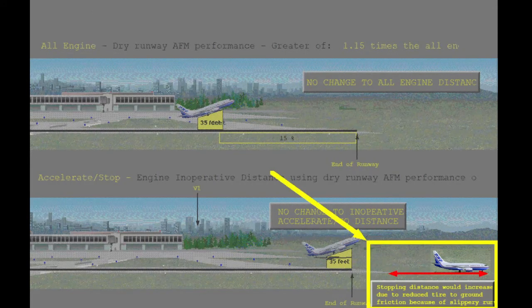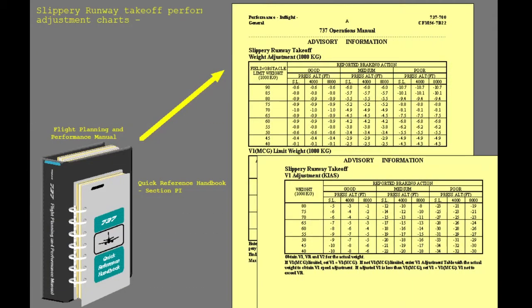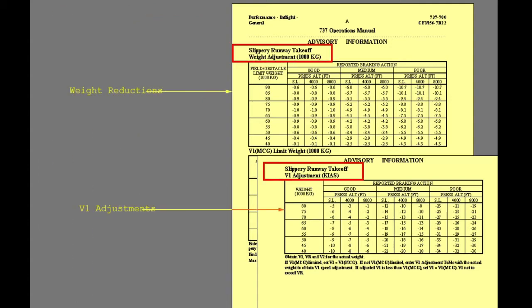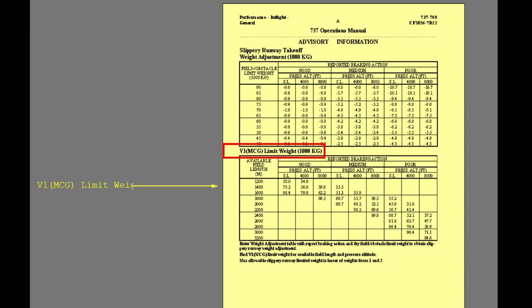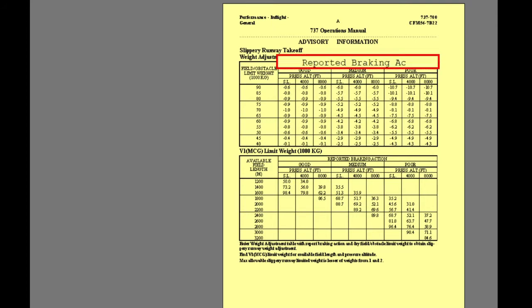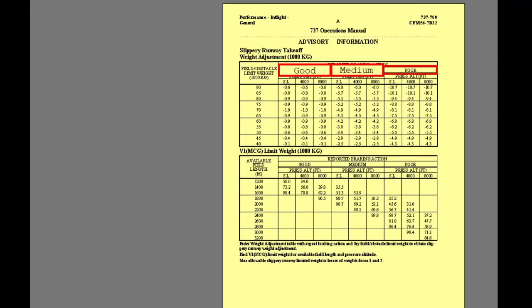As with the wet runway data, an airplane dispatched assuming a dry runway but operating on a slippery runway would not have the ability to stop within the normal dry runway distances. The quick reference handbook and the flight planning and performance manual contain slippery runway data as a function of reported braking action. This data is presented as weight adjustments and V1 adjustments from the normal dry runway performance. V1 MCG limit weights are also presented. The data is presented at three levels of reported braking action: Good, Medium, and Poor.